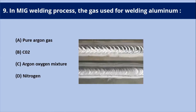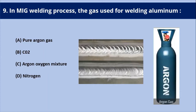Next question: in MIG welding process, what gas is used for welding aluminum? If you are welding non-ferrous metals like titanium, aluminum, or magnesium, you need to use pure argon gas, because pure argon gives excellent results on all aluminum welding in the MIG welding process. The answer is: pure argon gas is used for welding aluminum material.